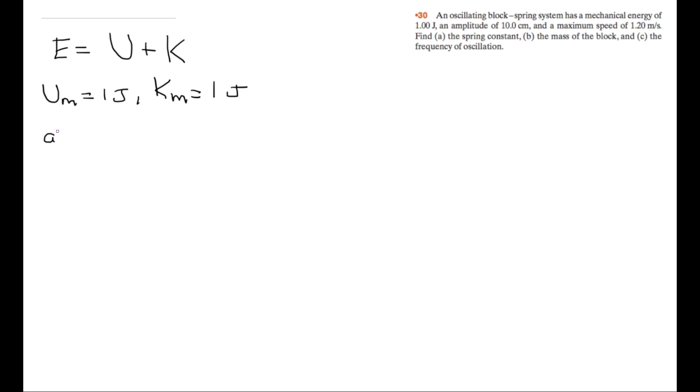So for A, we have to find the spring constant. We'll use Um. So we have Um is equal to one half K times xm, the amplitude squared. So we know what the amplitude is, 0.1 meters. We know what Um is, 1 joule. We just have to solve for K. So we have 1 is equal to one half K times 0.1 squared. And if we solve this, K is equal to 200 newtons per meter.